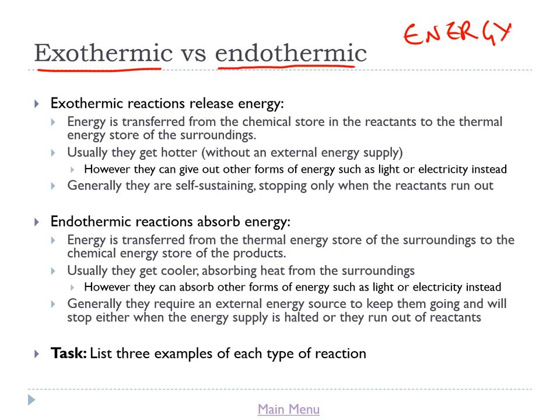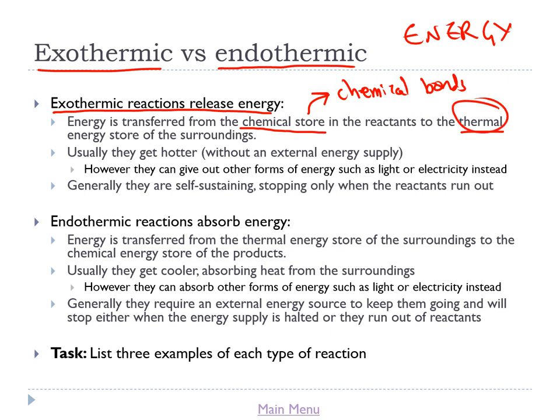You'll probably know this from GCSE, but to remind you: exothermic reactions are reactions that release energy. What that means is that energy is transferred from the chemical store of the reactants to the thermal energy store of the surroundings. When we say chemical energy store, we're talking about the energy locked up in the chemical bonds of the reactants. The reactants will have more energy stored in their chemical bonds than the products, and that difference in energy is what gets released to the surroundings as thermal energy.